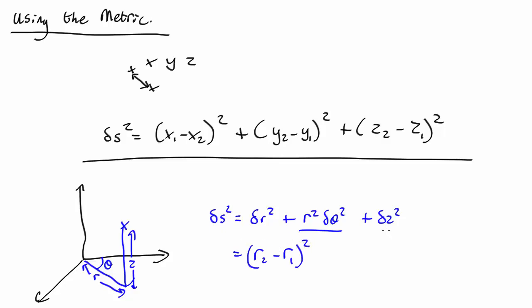Only valid, remember, if these things are close together. The dz is quite easy. That's just z2 minus z1 squared.